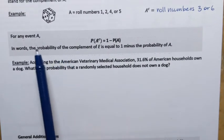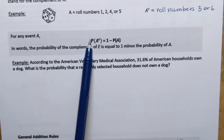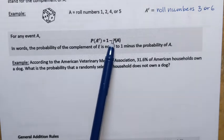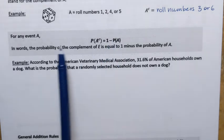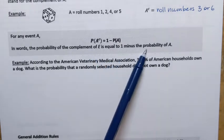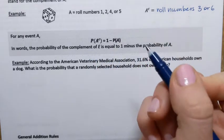For any event A, probability of a complement equals 1 minus probability of the event itself. In words, the probability of the complement is equal to 1 minus the probability of A.